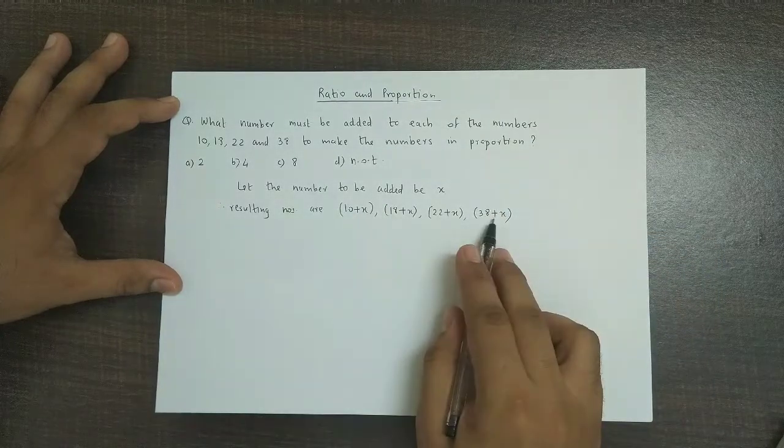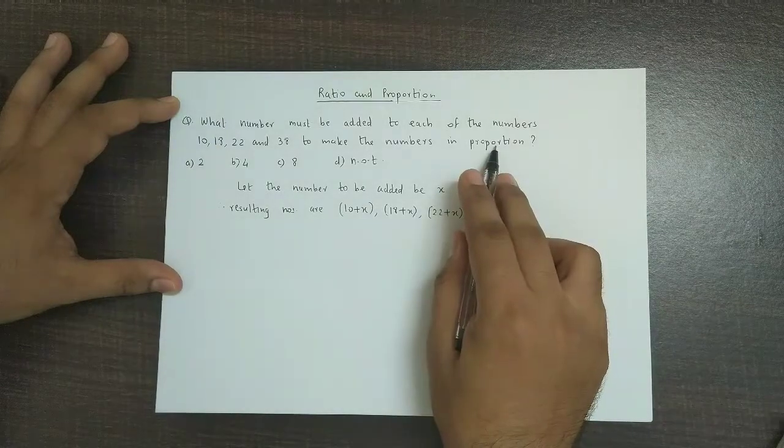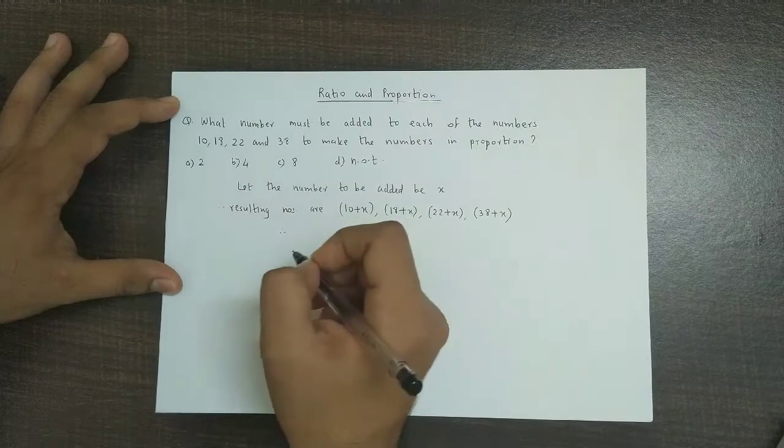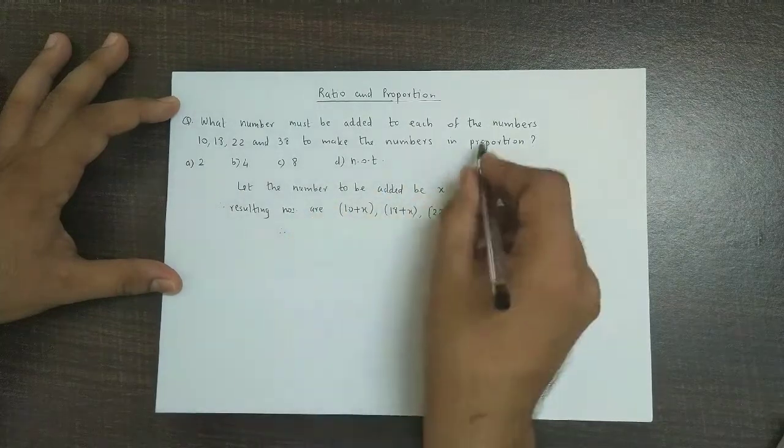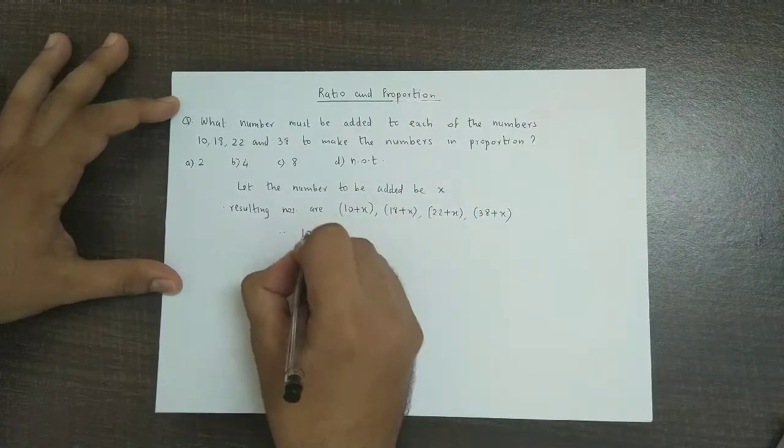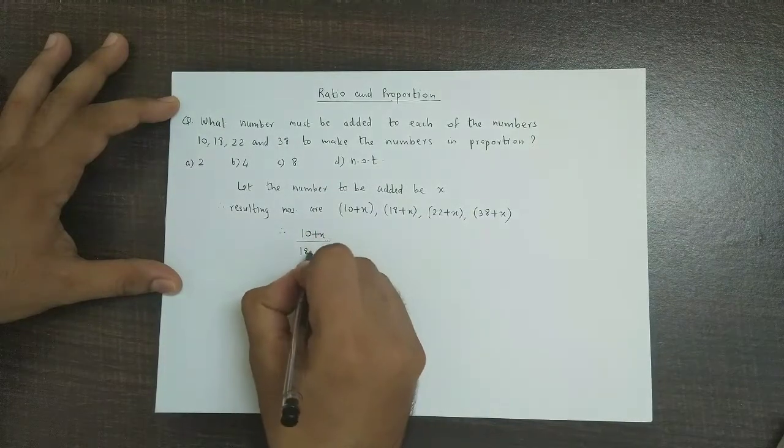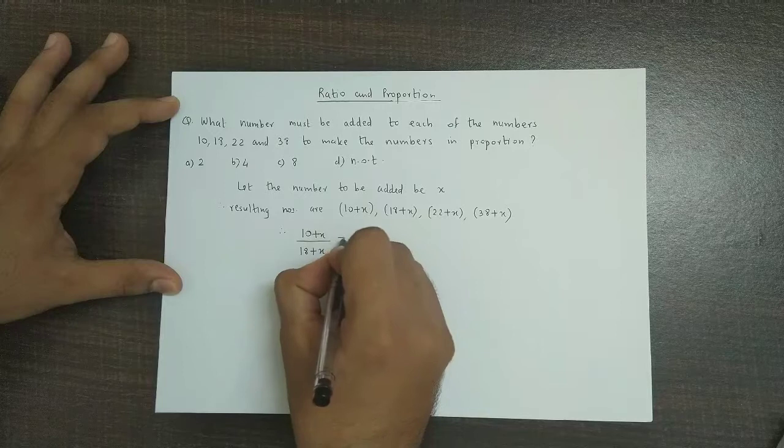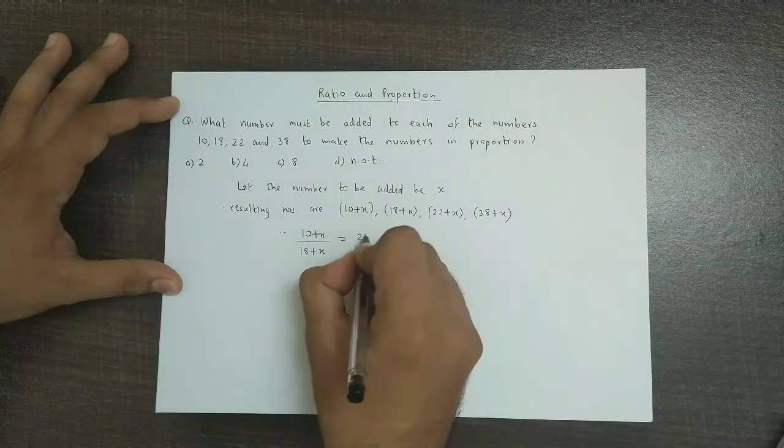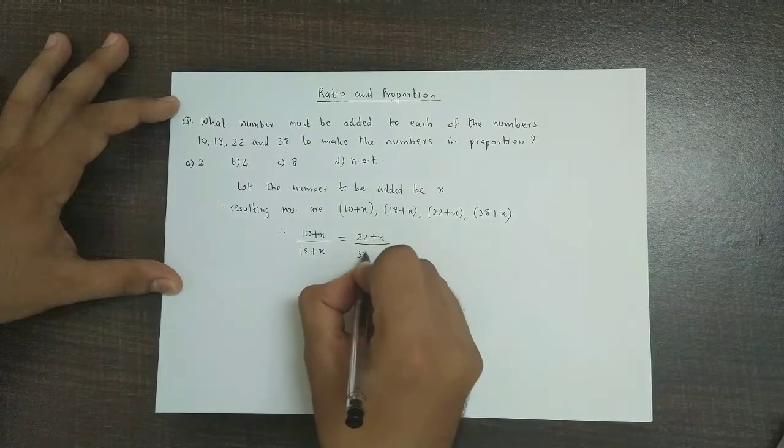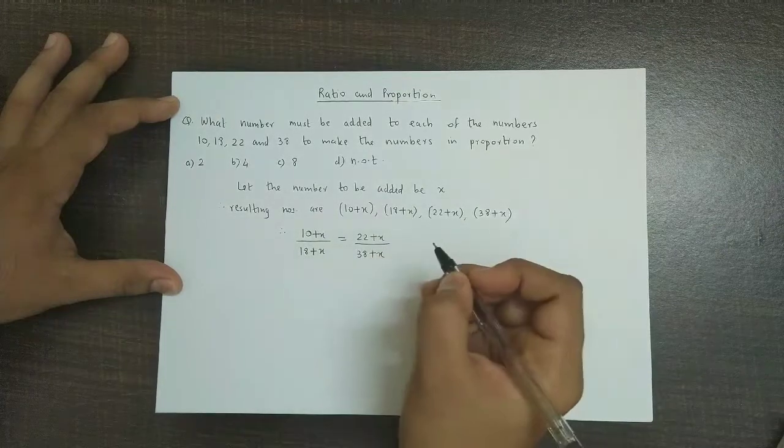Now these numbers are said to be in proportion. So as these four numbers are in proportion, therefore by using the given condition we obtain 10 plus x upon 18 plus x is equal to 22 plus x upon 38 plus x.